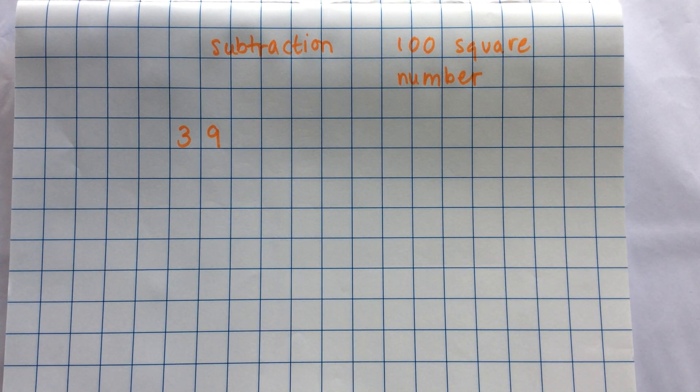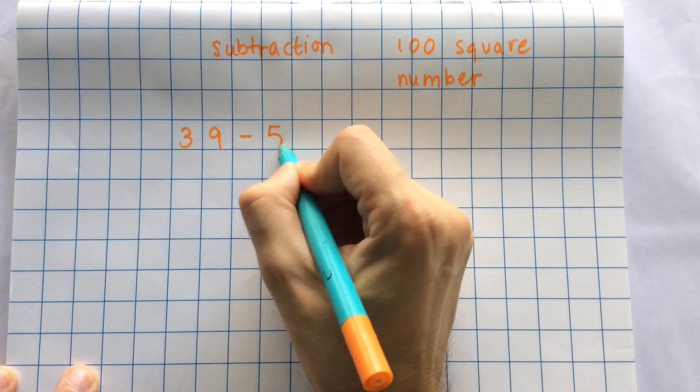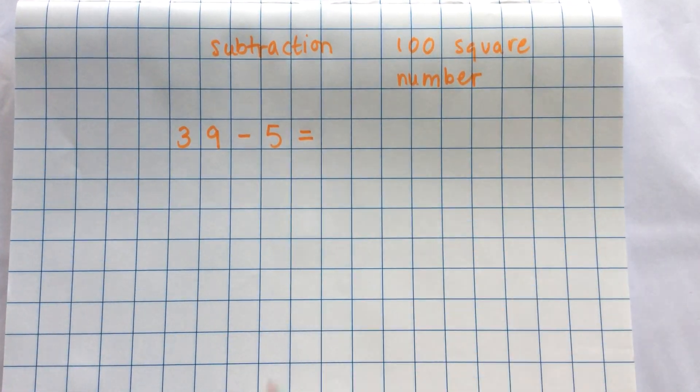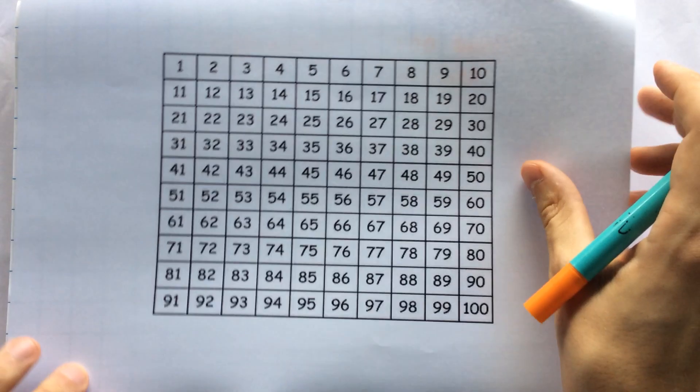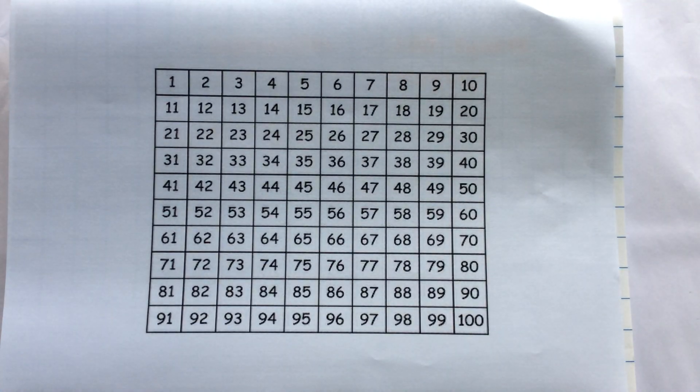Let me show you how to use a hundred square first. If my problem is 39 minus 5, get my hundred square and I find the number 39.